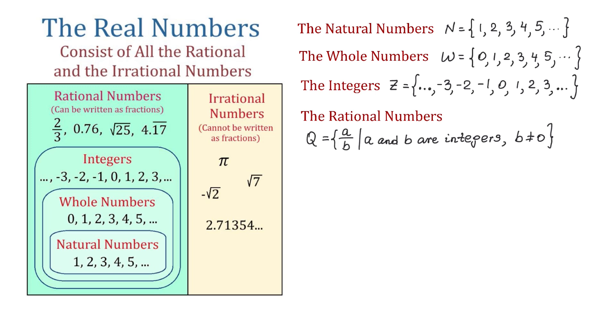As you see, with the previous sets we used the roster method because we could list the numbers one after the other one. However, with fractions, between two fractions there are infinitely many other fractions, so we cannot list them one after the other one.